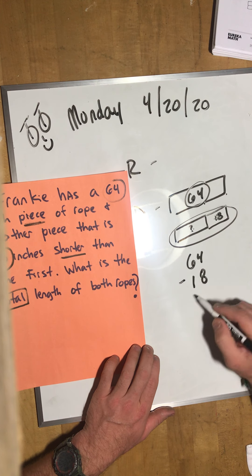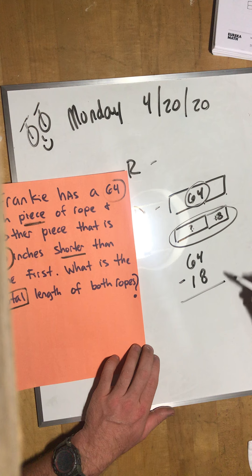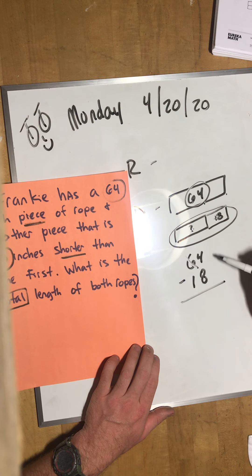So let's go ahead and figure out. 64 is one of the pieces. We need the other piece of rope to figure that out. Let's go ahead and subtract. 64 minus 18.